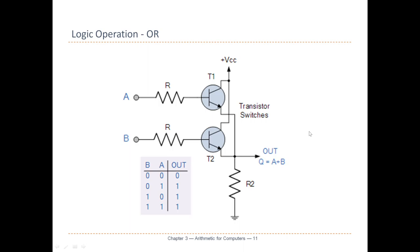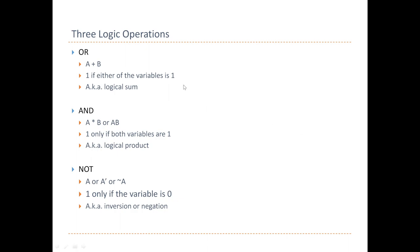We can just keep building things with transistors. We just showed that we can build three basic logics. OR — we typically use a plus to represent logical OR; it gives one if either variable is one, also known as logical sum. AND — written as A·B or just AB — it's one only when both variables are one, also called logical product. NOT is represented with a bar (A-bar), or A-prime. If it's one, it becomes zero; if it's zero, it becomes one. So it's an inversion. Those are the three basic logics.